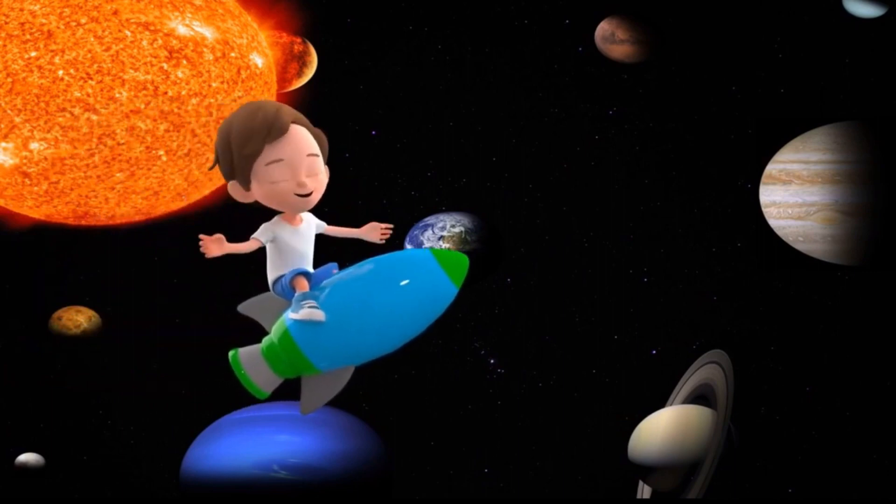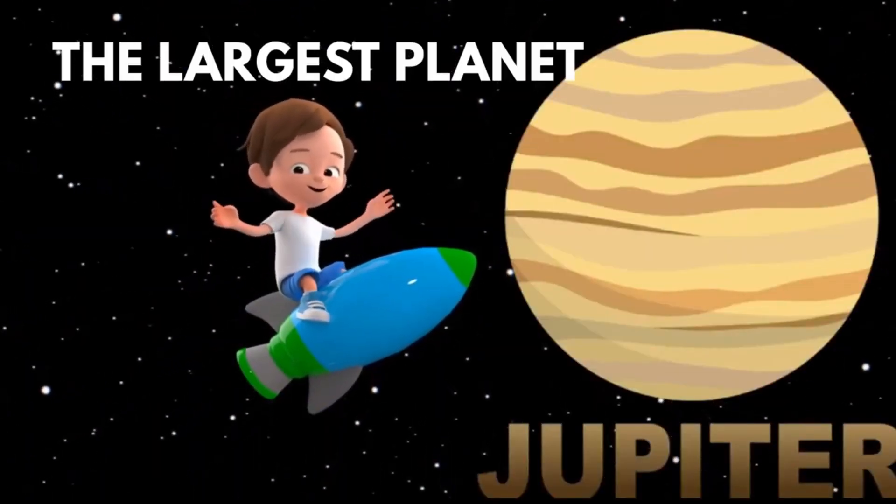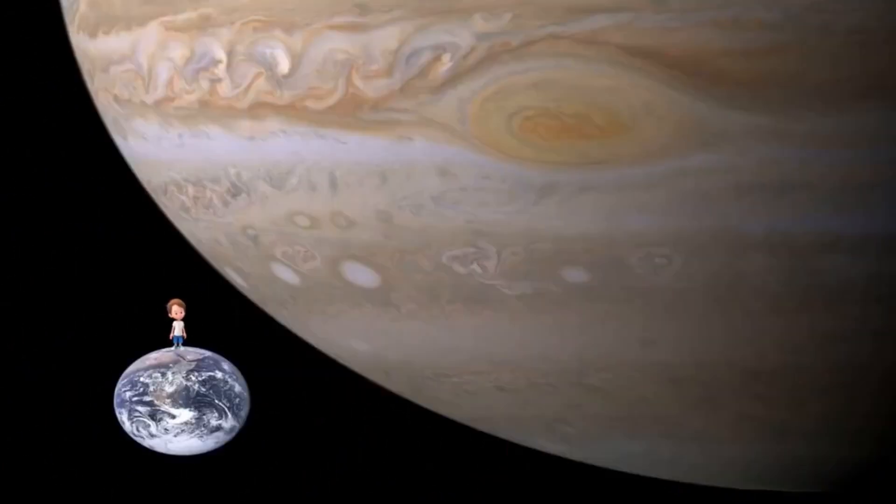The fifth and the largest planet in the solar system is Jupiter. It is so large that it can occupy nearly 1,300 Earths inside it.